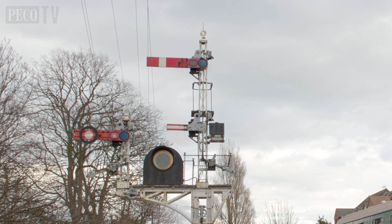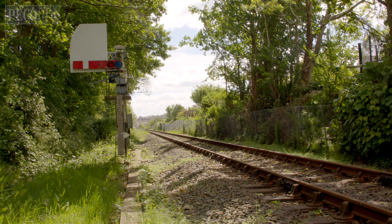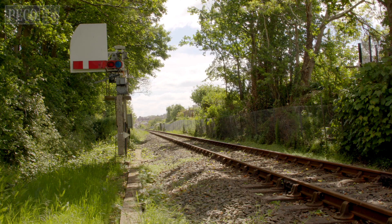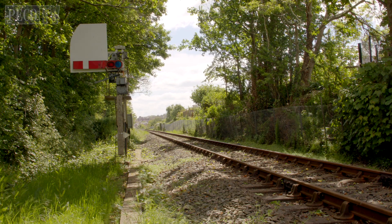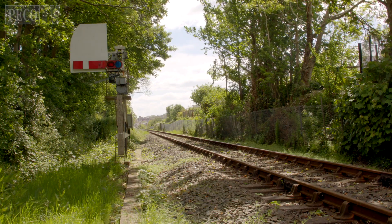To allow the signal indication to be seen at night, the arm is fitted with two lenses duplicating the indication displayed. The lenses are illuminated from behind, originally by oil lamps and later on by electric lamps.